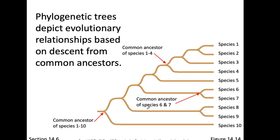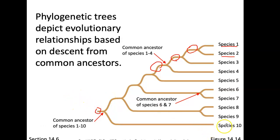We build phylogenetic trees that depict evolutionary relationships. We can look at species one and two and say they're different, but they used to share a very recent common ancestor. If you go back further, they had this common ancestor, and even further back another common ancestor. You can keep going back until you find the common ancestor for all the species, not just one and two. By arranging them in trees, species one and two are more related to each other than to species three, yet species three also shares a common great-grandfather.